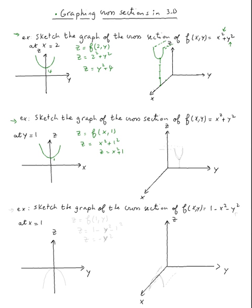How do we graph it in 3D? We go to y = 1, then go 1 unit up, and then graph it. This goes to the back, and just to give it perspective so you can see where it stands — so it's this curve right here.